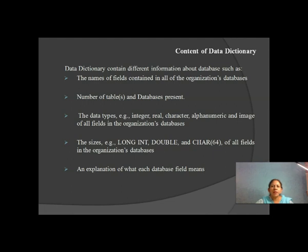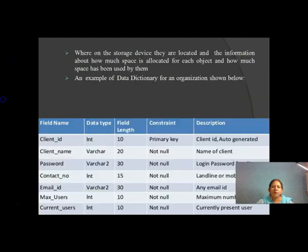In any database, the data dictionary stores information about how many tables and databases are present. The data type of each field — such as integer, real, character, alphanumeric — can all be seen in the data dictionary. We can also see the size of each table, whether it is long, integer, or double. The data dictionary is a storage where all the knowledge of the database is available at a glance.